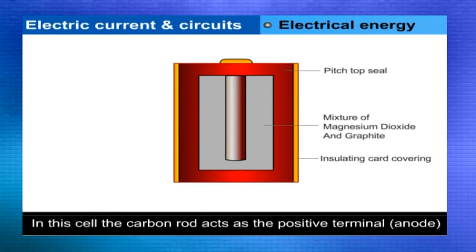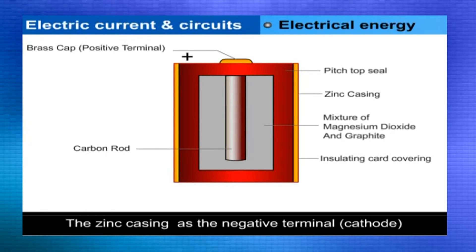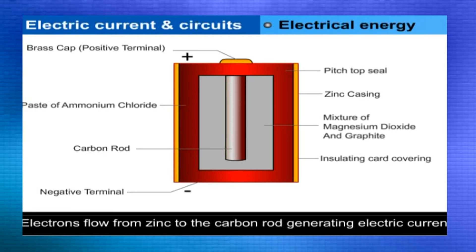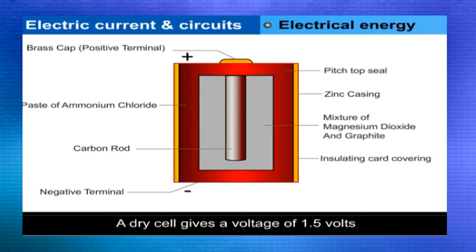In this cell, the carbon rod acts as the positive terminal (anode), and the zinc casing, which reacts with the ammonium chloride paste (electrolyte), acts as the negative terminal (cathode). At the anode, zinc loses electrons, and at the cathode, gain of electrons takes place. Electrons flow from zinc to the carbon rod, which generates electric current. A dry cell gives a voltage of 1.5 volts.